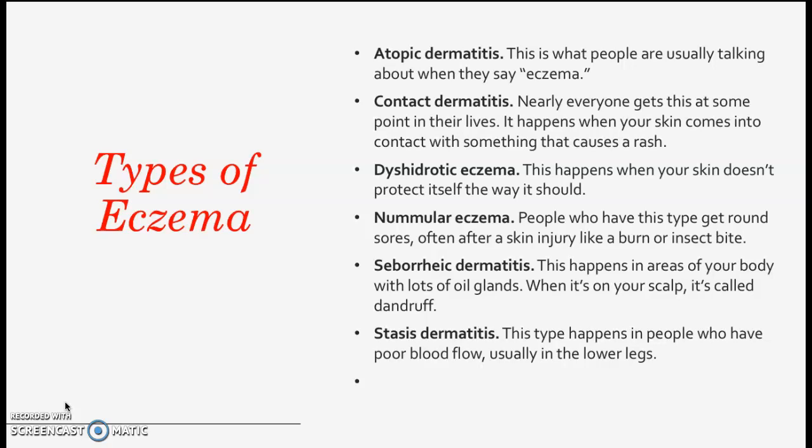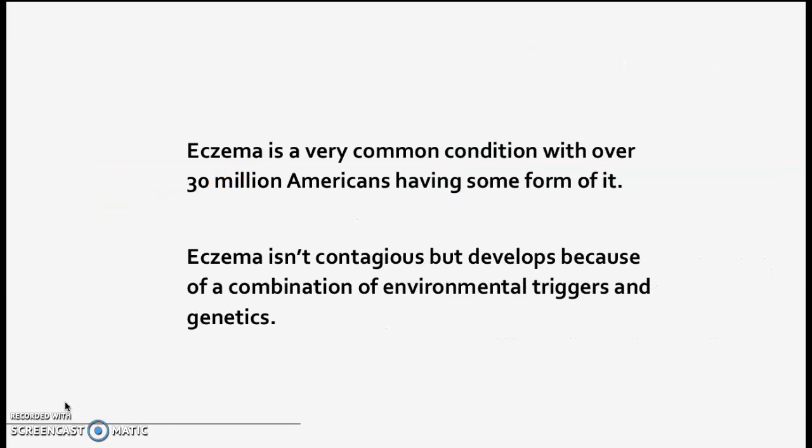Seborrheic dermatitis happens in an area of your body with lots of oil glands. When it's on your scalp, it's called dandruff. Stasis dermatitis happens in people who have poor blood flow, usually in their lower legs.